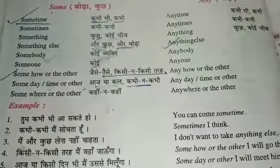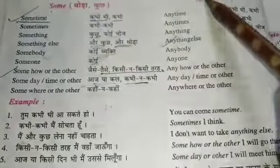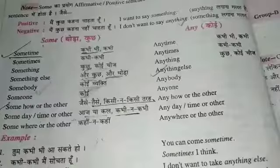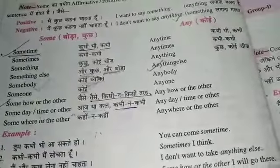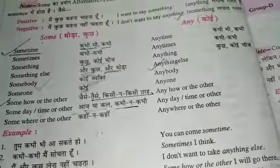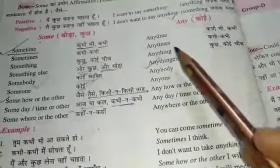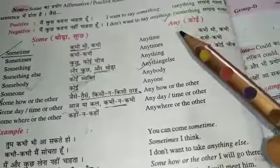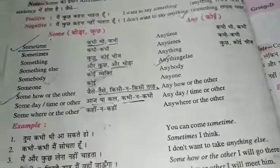So I hope you all have understood the difference between some and any. For more clarification we need to make more sentences. Some aur any ka jitna sentence hum banaate jayenge woh clear hota jayega.